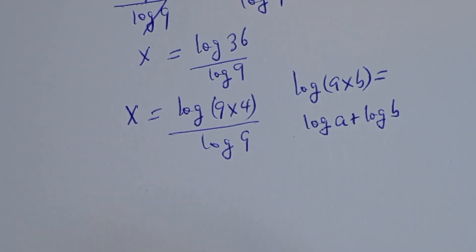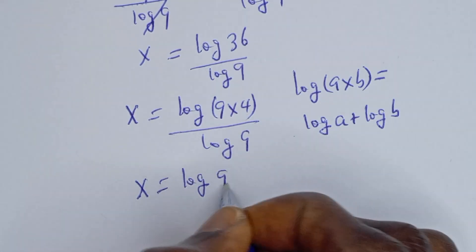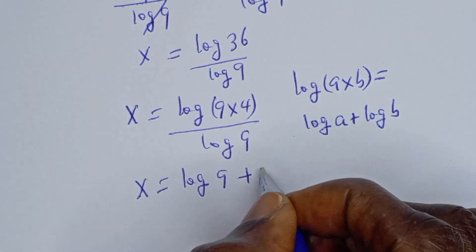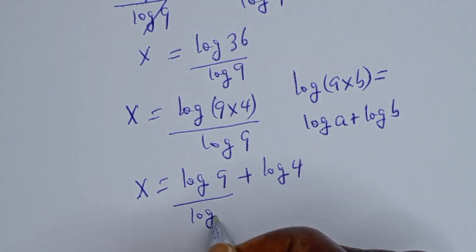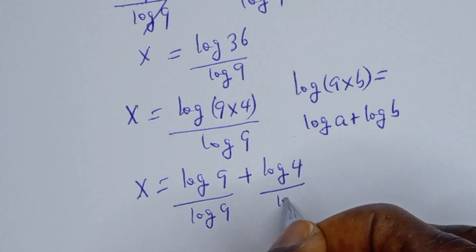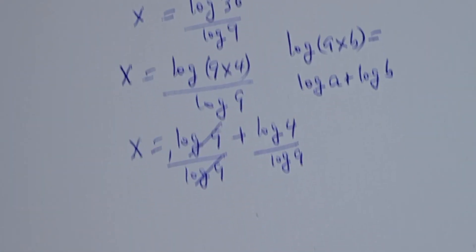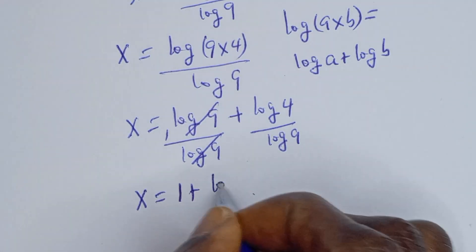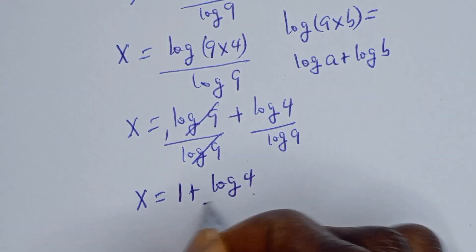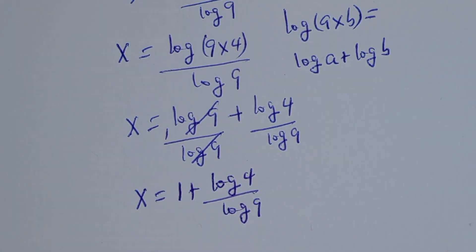Then this can be written as s is equal to log 9 plus log 4, divided by log 9. Dividing log 9 by log 9 gives 1. So s is equal to 1 plus log 4 over log 9.